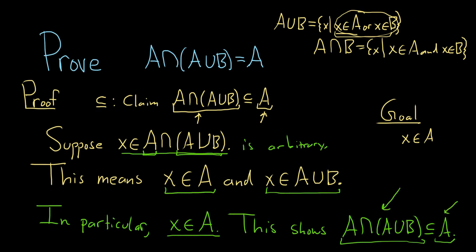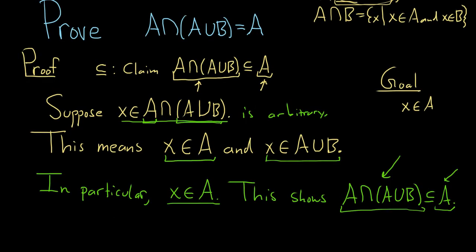Now we have to go the other way. We have to show that every element in A is a subset of the other set. So let's go this direction, and so the claim this time is that A is a subset of A intersect A union B. So we start by taking an element in A. So suppose X is in A.